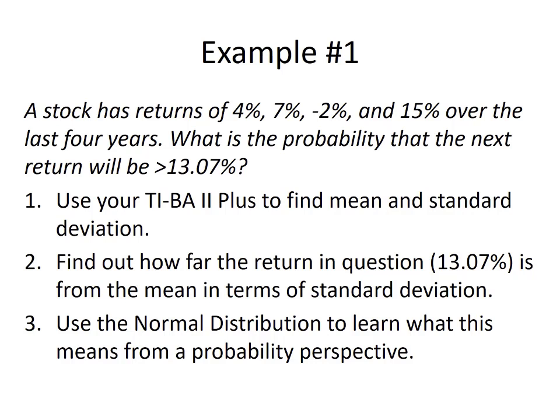I will show you how to do this calculation in the next slide. The second step will be to find out how far the return in question — in this case 13.07% — is from the mean in terms of standard deviations. In other words, how many standard deviations away from the mean is 13.07%? And then finally, we're going to use the normal distribution to learn what this means from a probability perspective.